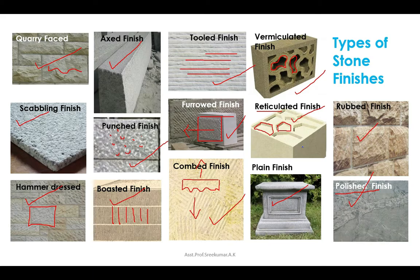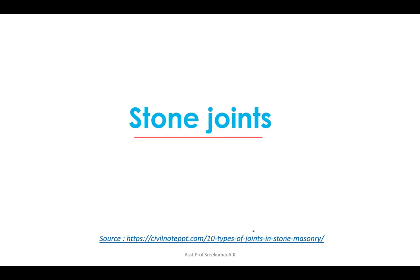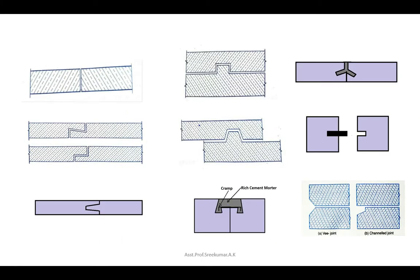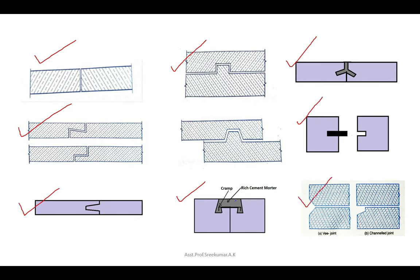Now let's move on to the next topic: stone joints. There are numerous types of stone joints used to secure stones firmly with each other. The common types are: butt joint or square joint, rebated joint or lab joint, toothed or grooved joint or joggle joint, bed joint or table joint, cramped joint, plug joint, dowel joint, rusticated joint, and saddle joint.